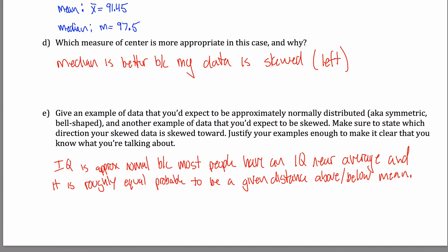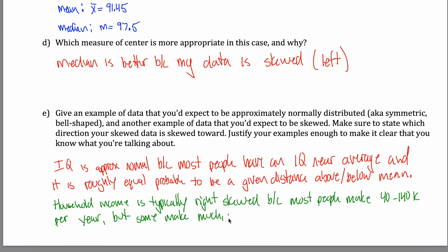Give another example of data you'd expect to be skewed. Well, the example that we talked about in class, household income is typically right-skewed, I suppose, because most people make, I don't know, 40 to 140K per year, but some make much, much more than that. Must be nice. I don't. That's what I get for teaching. Make sure to state which direction your skewed data is skewed towards. Skewed, right?